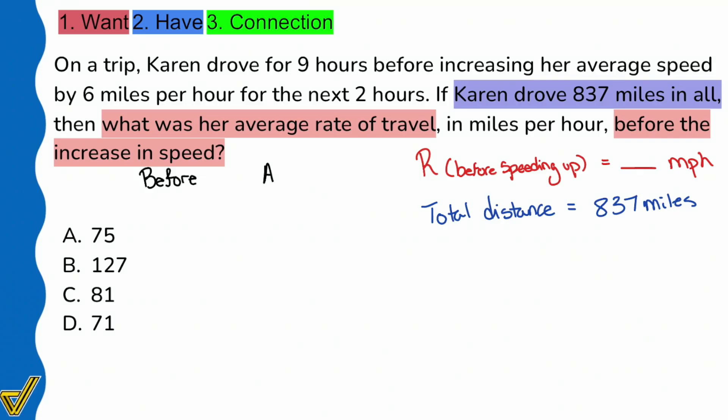Before the increase in speed, our friend Karen - let's use a green highlight - drove for nine hours. So we see that the time equals nine hours. The rate before the speed increase was just going to be R. That's what we're looking for.